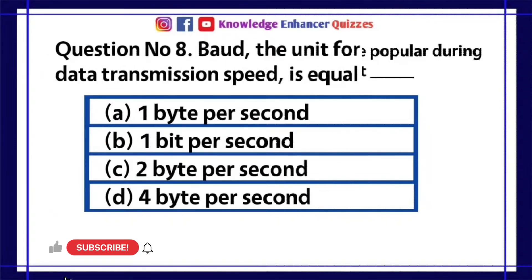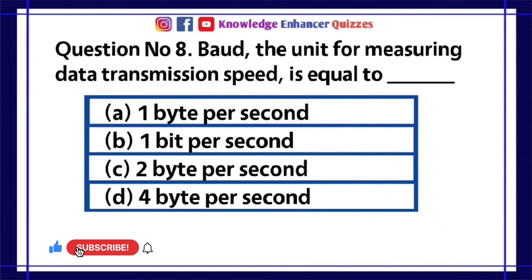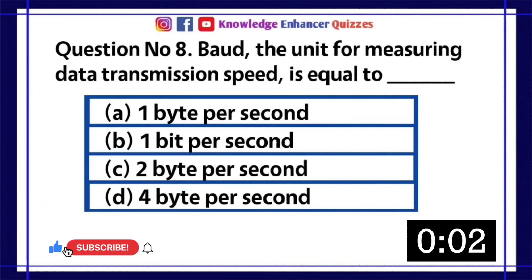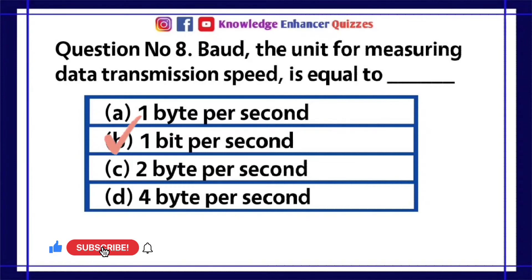Question number 8. The unit for measuring data transmission speed is equal to dash? A. One byte per second. B. One bit per second. C. Two byte per second. D. Four byte per second. Option B is the right answer.